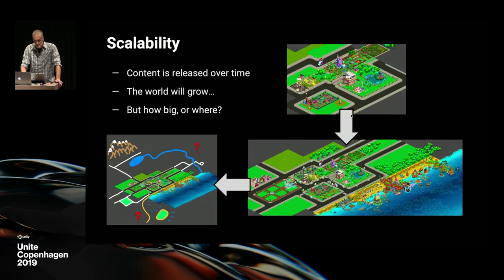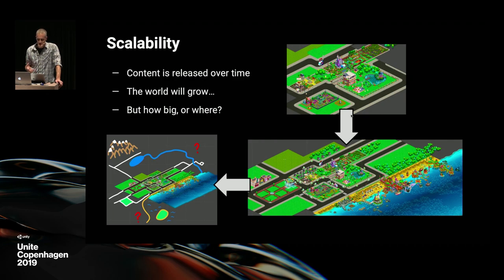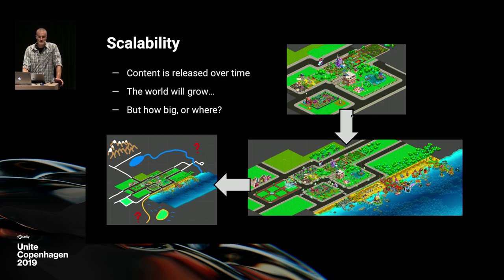Where does scalability come into this? We are a continuous content game — we're always releasing new content over time after we're live, on a very regular basis. We know the world is going to grow as the story gets bigger and longer. In this context, scalability is our ability to add content as we need it. We've been live for about a year, and the world has already tripled in size. The first picture is where we shipped a year ago, the second is where we are now, which is a whole lot bigger.